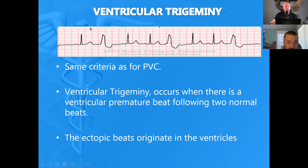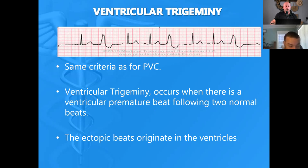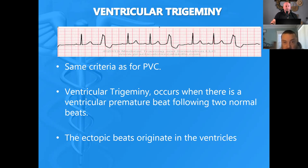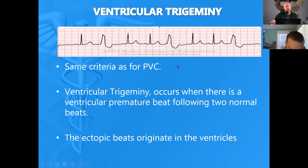Now we have a stable patient with ventricular rhythms — great candidate for amiodarone. This is a stable pulse-producing patient. The live dose for amiodarone is 150 milligrams as an infusion over 10 minutes. Now if this patient goes unconscious and we start to work them, the dead dose of amiodarone would be 300 milligrams pushed.